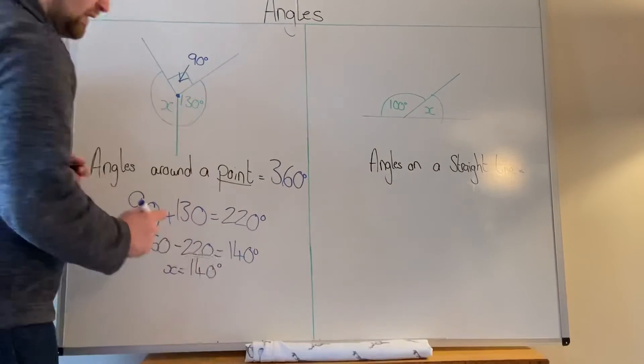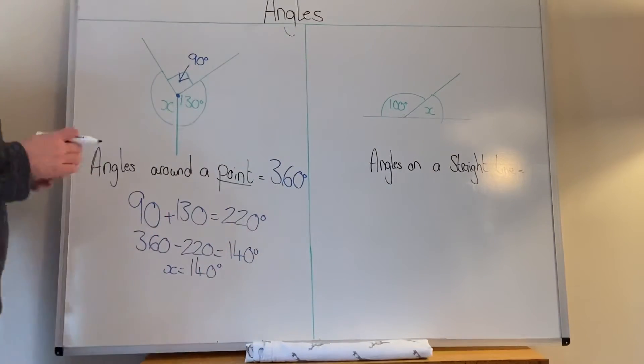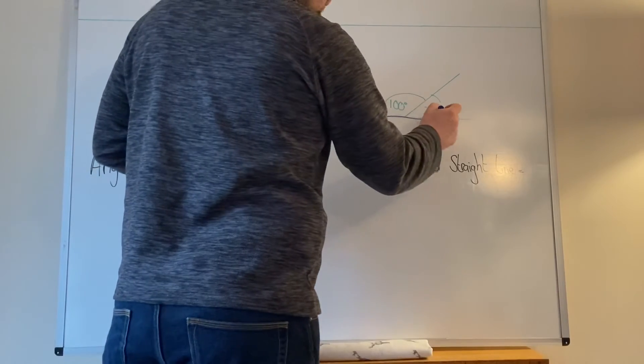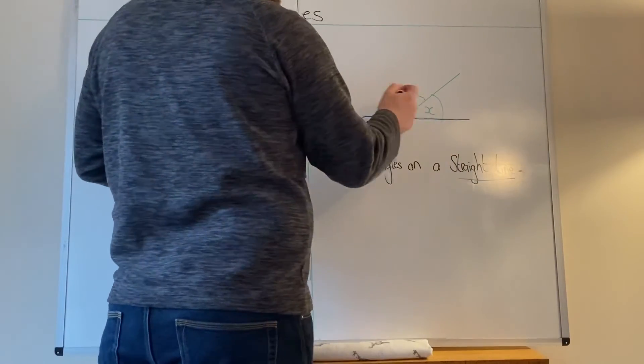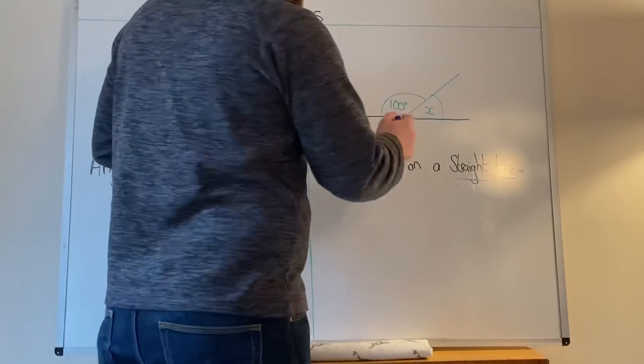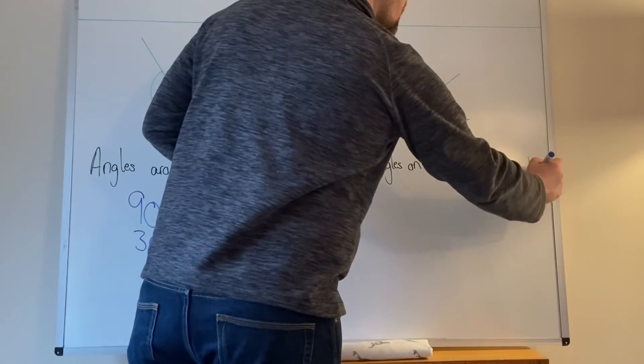Don't forget your degrees sign, please. So angles around a point add up to 360. The other side of it, angles on a straight line. Now here's your straight line. So working with straight lines and there are your angles. Your angles literally on a straight line. Now angles on a straight line add up to 180 degrees.